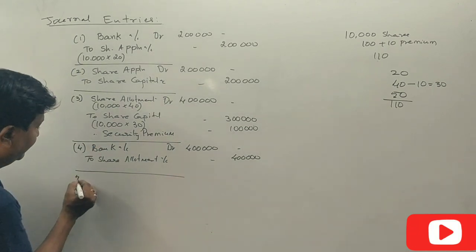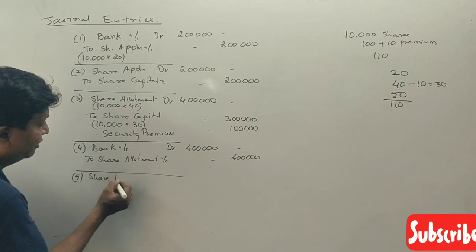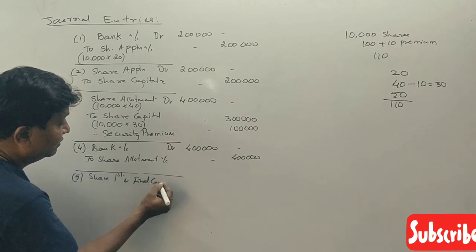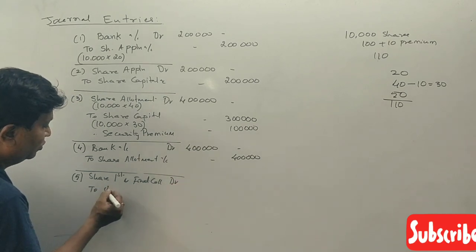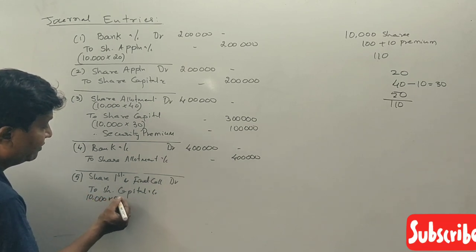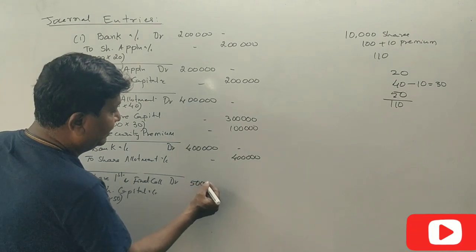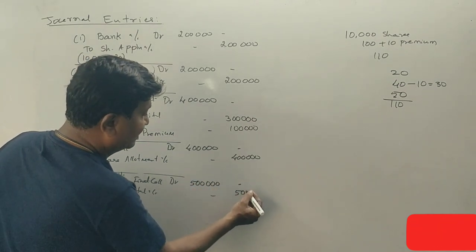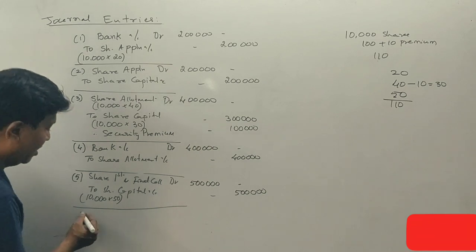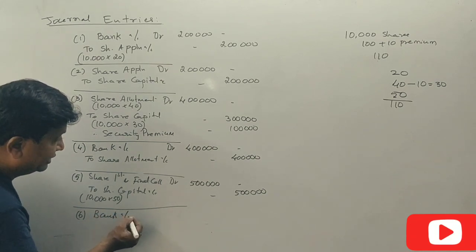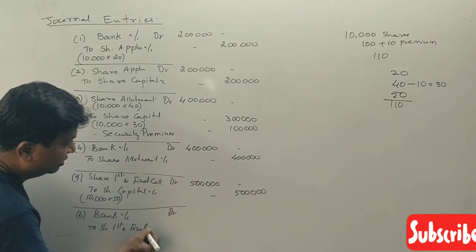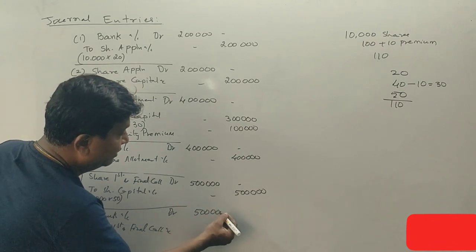Share first and final call account debit to share capital account: 10,000 into ₹50 rupees equals ₹5 lakhs. Being share first and final call money due. Next entry: bank account debit to share first and final call account — ₹5 lakhs.